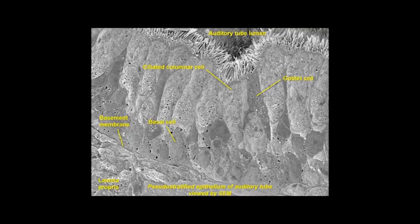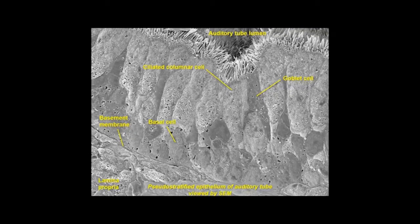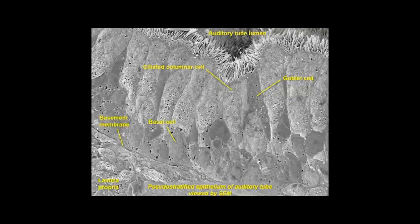Viewed by scanning EM, this fractured pseudostratified epithelium in the auditory tube contains ciliated columnar, goblet, and basal cells, all resting on a basement membrane and underlying bed of connective tissue called the lamina propria.